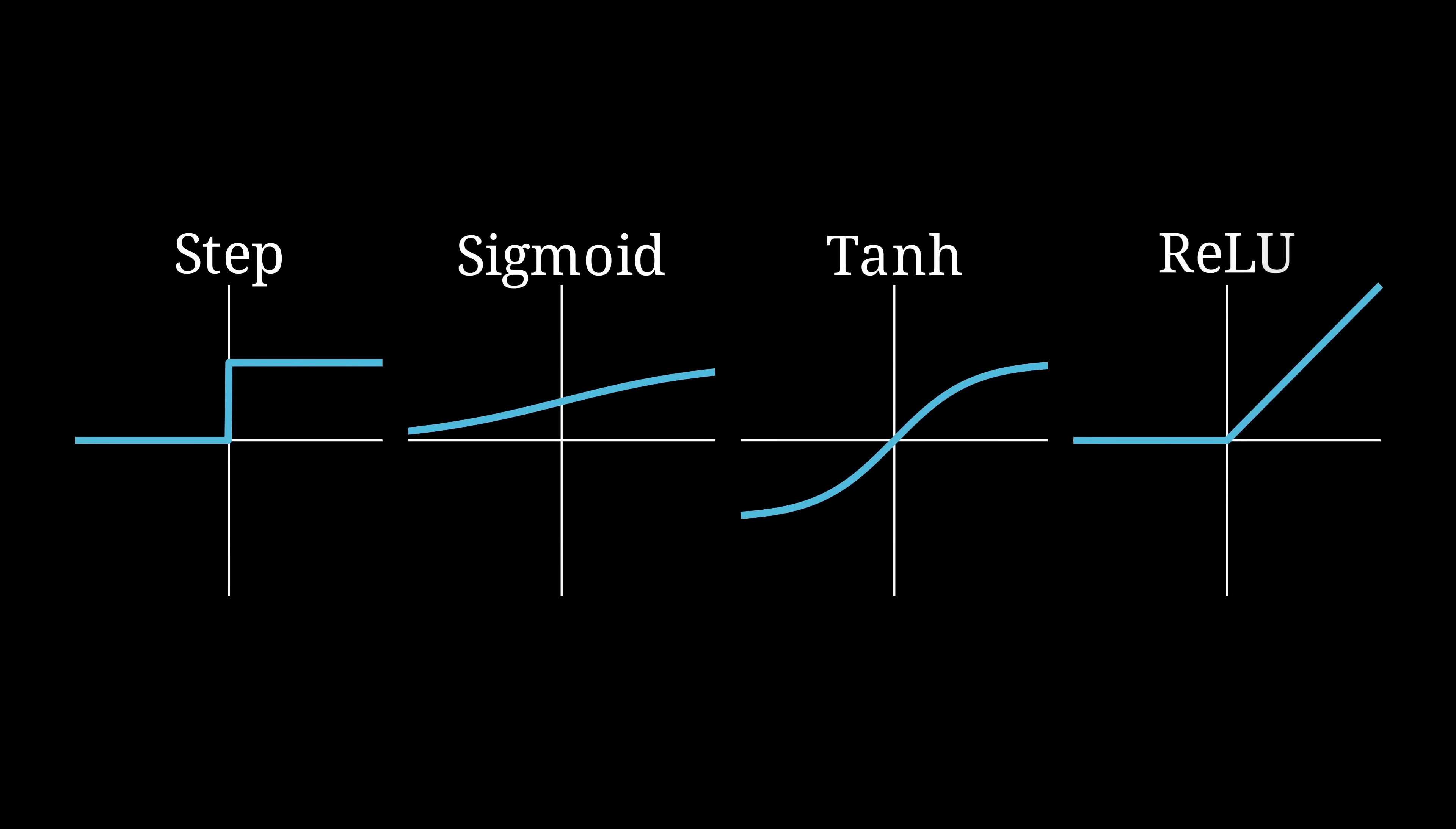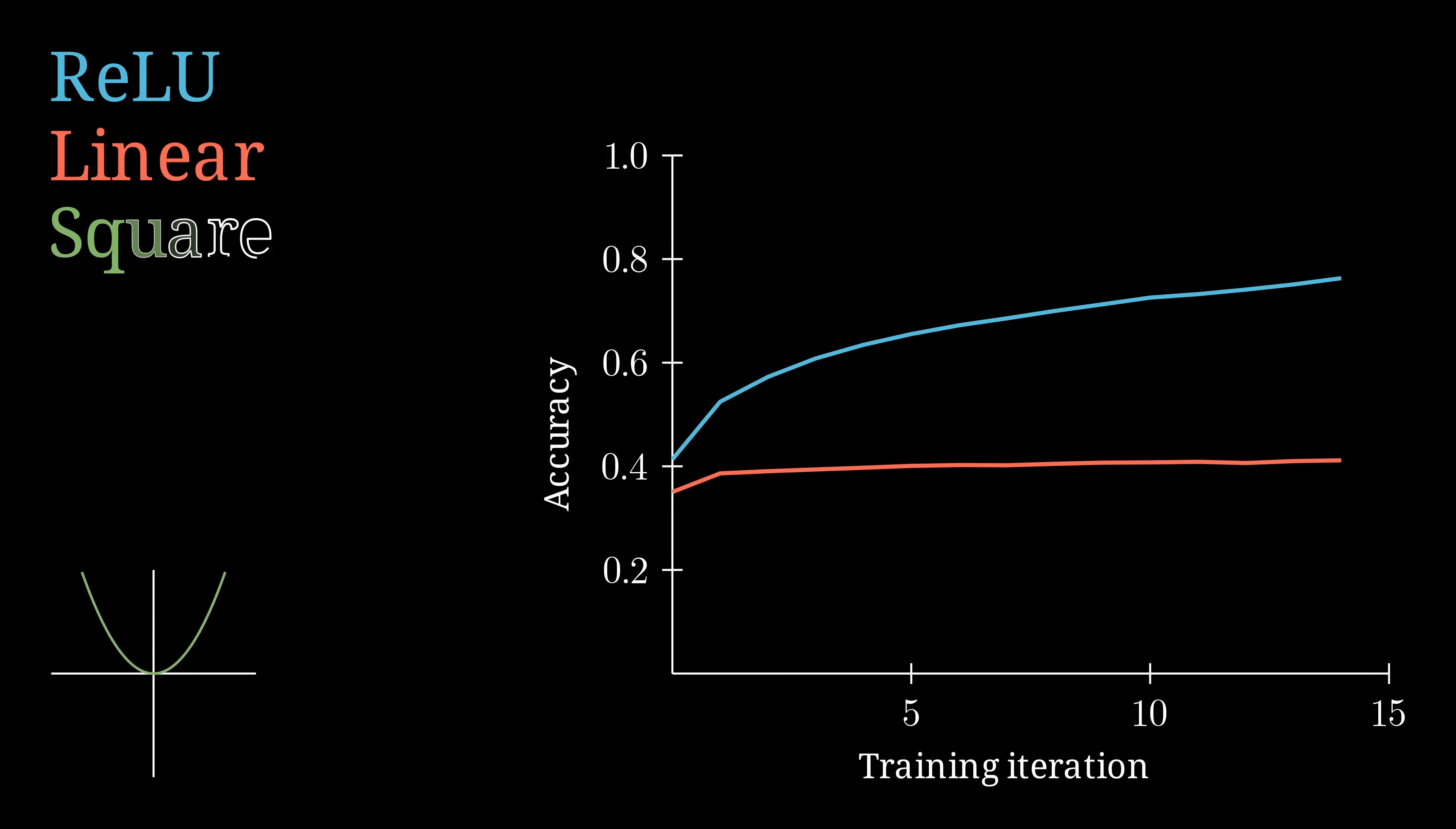Now you may wonder, most of the previously mentioned activation functions were all monotonic, but do others work too? For example, the square function? Indeed it does.